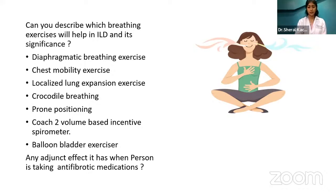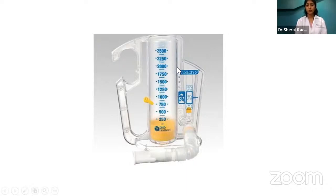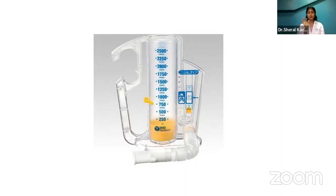This is a volume-based incentive spirometer. Lung volume is reduced in ILD and you need to focus on improving it day by day. When the patient performs it, set the yellow marker at a target level and ask the patient to take a slow, deep, controlled breath — it shouldn't be rushed. It has to go slowly so there is a stretching effect on the lung, which helps the lungs expand.